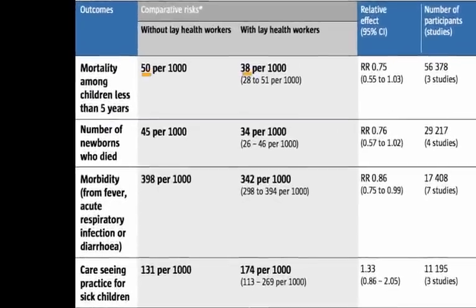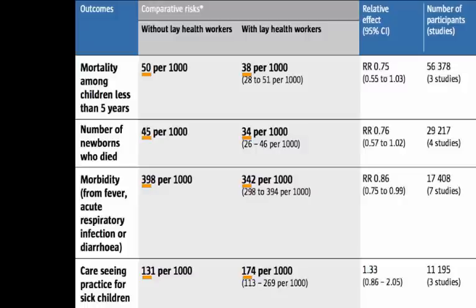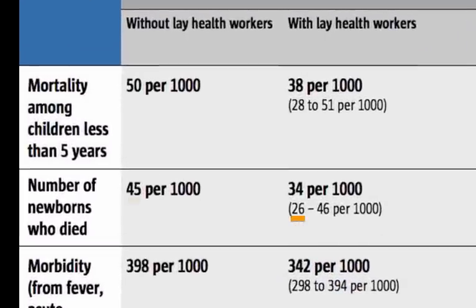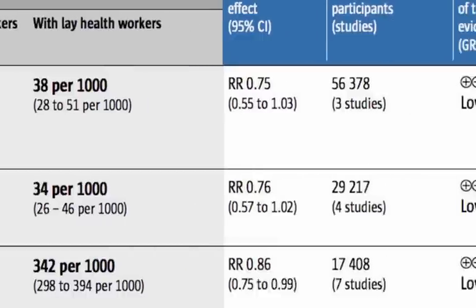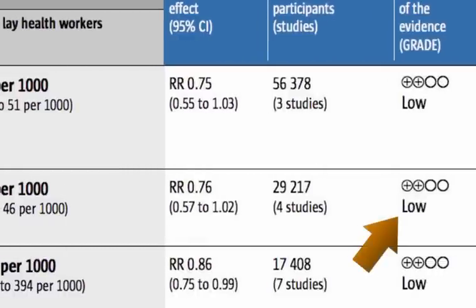As you can see from the table, our estimate suggests that lay health workers had a positive effect. However, the confidence interval — the range of possible results — makes us somewhat uncertain. For instance, the best-case scenario suggests that visits from lay health workers may have led to even fewer newborn deaths, while the worst-case scenario suggests that these visits may have made no difference at all. In addition to these uncertain results, we also assessed the quality of this research evidence to be low. These two factors combined mean that these results should be interpreted with caution.